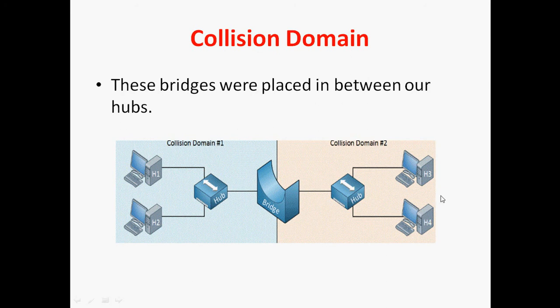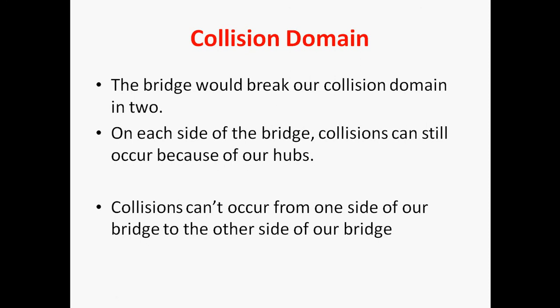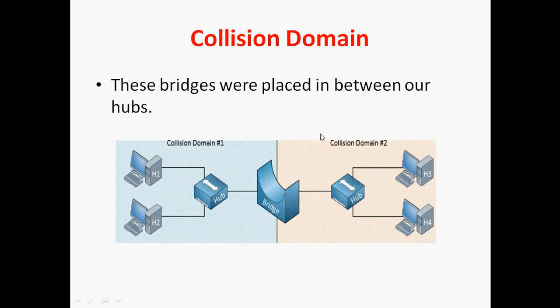The bridge breaks the collision domain into two. On each side of the bridge, collisions can still occur because of the hub. Each side of the bridge will have collisions due to the hub. However, the collision cannot cross from one side of the bridge to the other. The collision will occur within each individual hub's domain, but it won't propagate across the bridge.